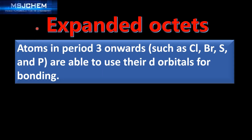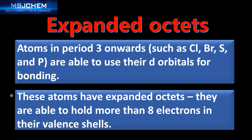Next we look at expanded octets. Atoms in period 3 onwards, such as chlorine, bromine, sulfur and phosphorus, are able to use their d orbitals for bonding. These atoms have expanded octets — they are able to hold more than eight electrons in their valence shells.